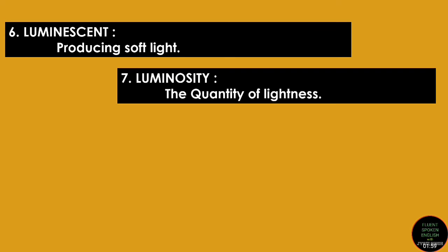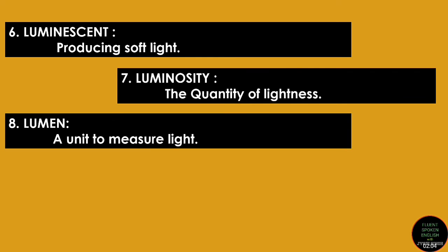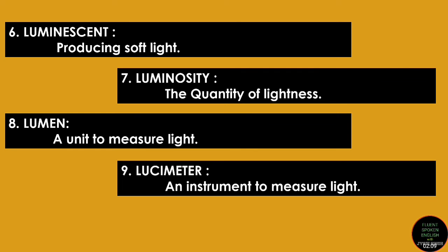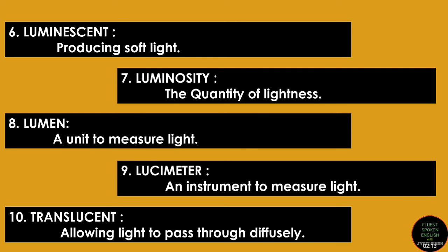'Luminosity' is the quantity of lightness — how bright the light is. 'Lumen' is the unit to measure light. 'Lucimeter' is the instrument to measure light. 'Translucent' — anything which allows light to pass through it clearly or diffusively is called translucent.